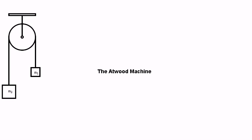The Atwood machine. An Atwood machine is a classical physics device that can be used to calculate gravitational acceleration. And here's the problem.